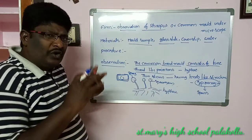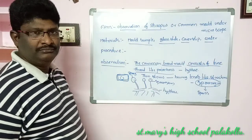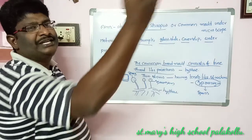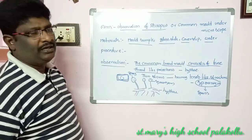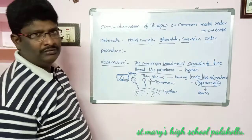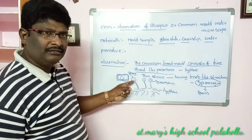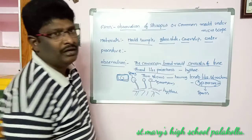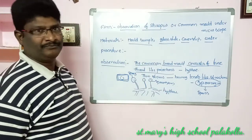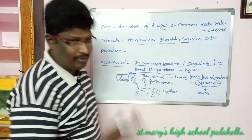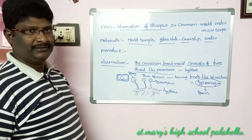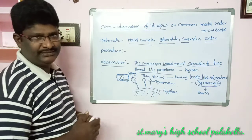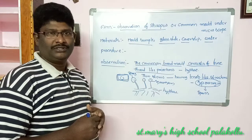When the spores are fully developed in the sporangium, the sporangium breaks up and the spores are released into the atmosphere. If the spores fall down in a suitable atmosphere, they grow and a new Rhizopus, or new common mold, develops. This is about the lab activity: observation of Rhizopus under the microscope.